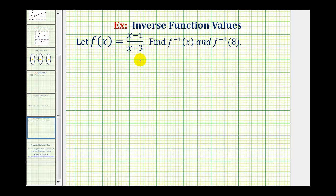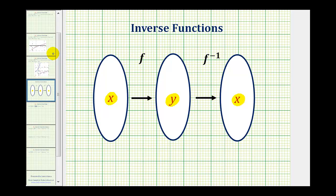To understand why this works, we need to understand that the inverse function undoes the operation of f of x. So for example, if x is the input into our function f and y is the output, these outputs become the inputs into the inverse function, which return the original value of x. So we can see these two functions undo each other.